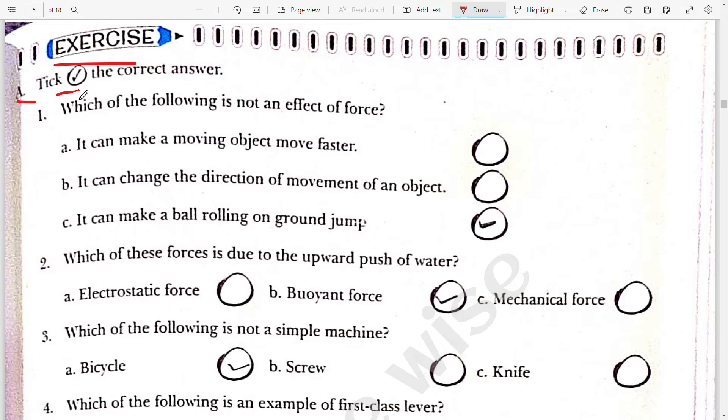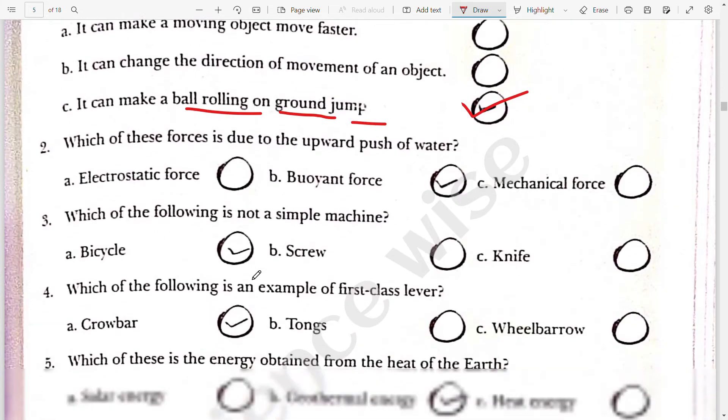Question number eight, tick the correct answer. First question, which of the following is not an effect of force? So the correct answer is it can make a ball rolling on ground jump. So this is the correct answer.